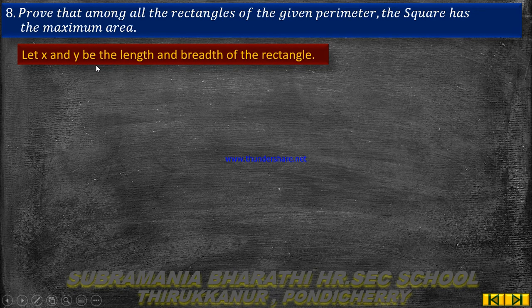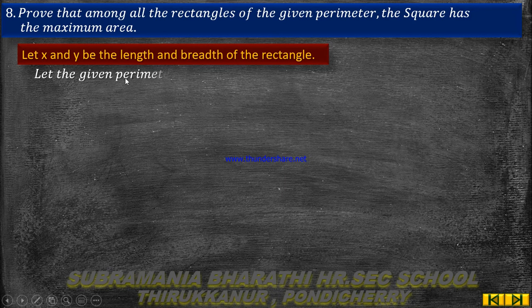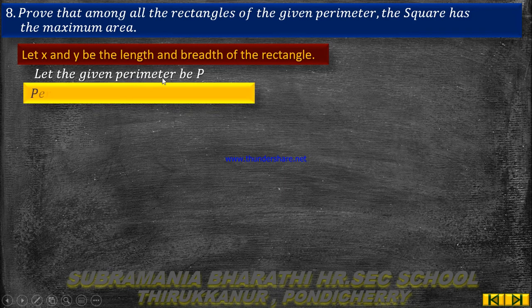Let x be the length of the rectangle and y be the breadth of the rectangle. The given perimeter is P.